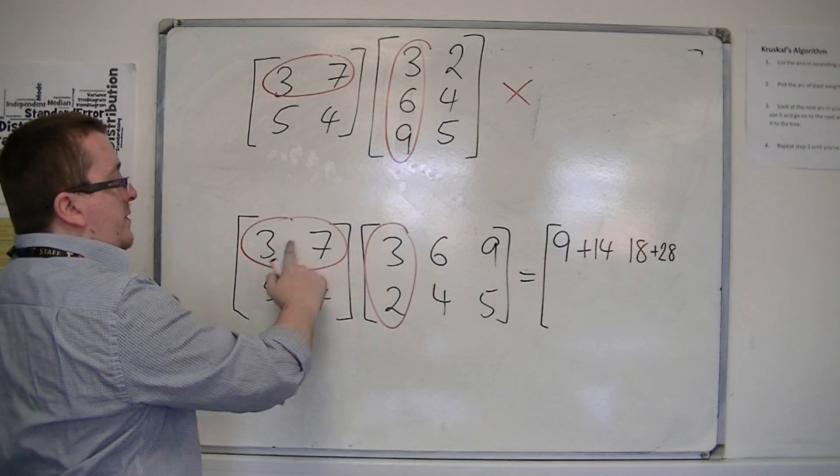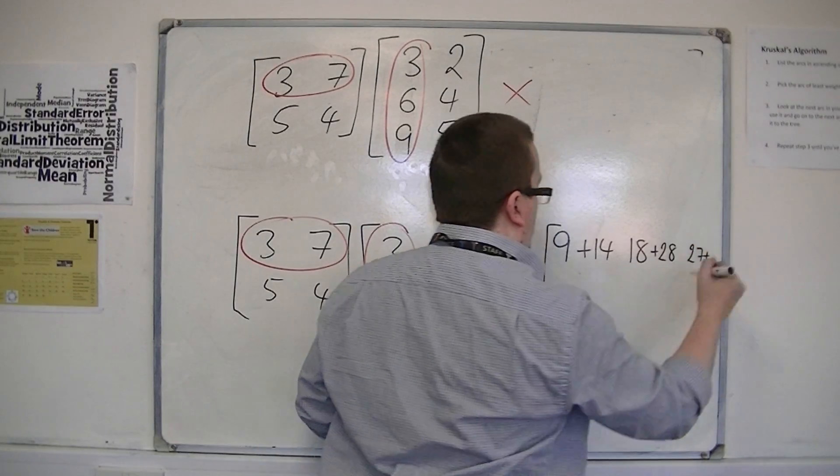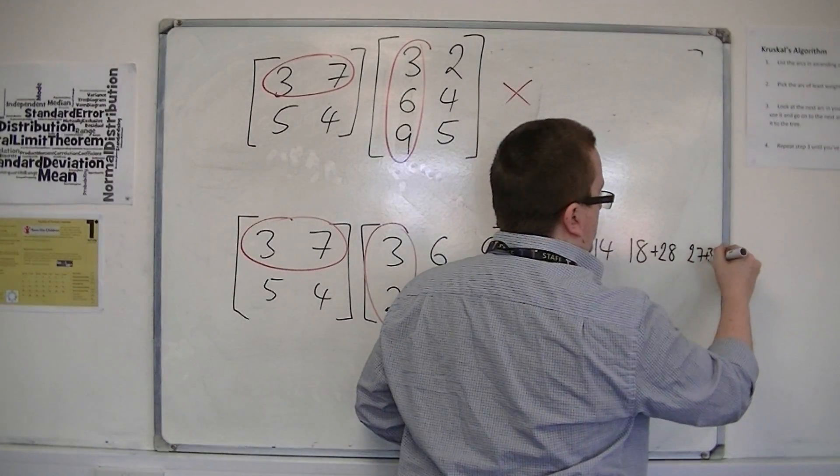Then I'm going to have 3, 7 multiplied by 9, 5, so 3, 9 is 27, and 7, 5 is 35.